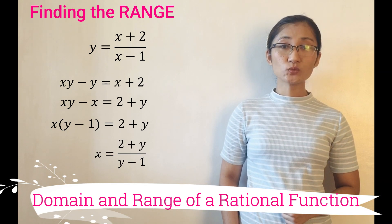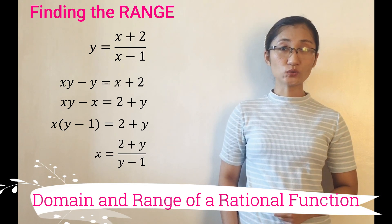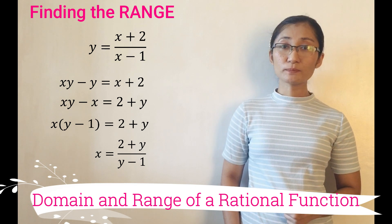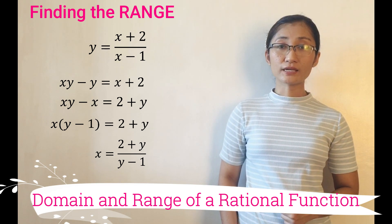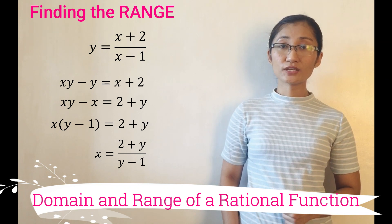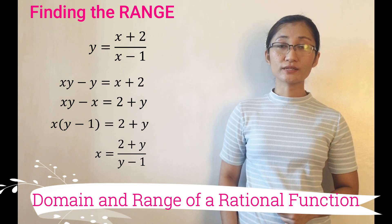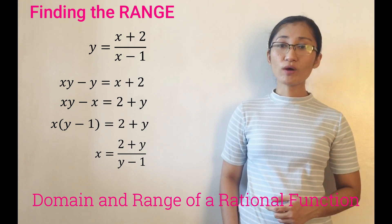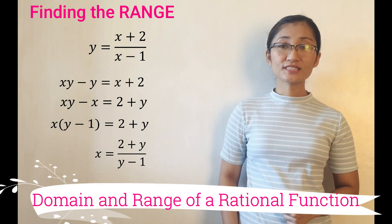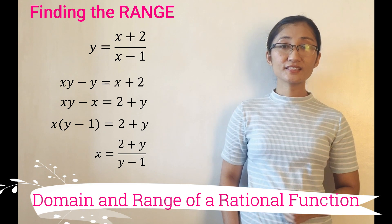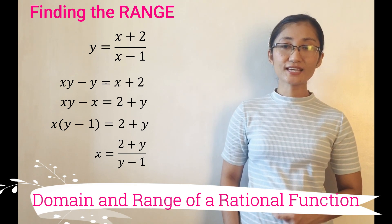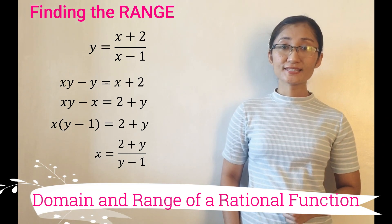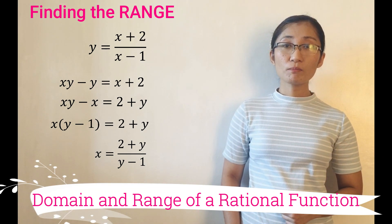Therefore, x equals (2+y)/(y−1), by multiplication property of equality, multiplying both sides by 1 over (y minus 1). Therefore, y cannot be 1 because if y equals 1, the denominator is 0. Hence, the range is the set of all real numbers except for positive 1.